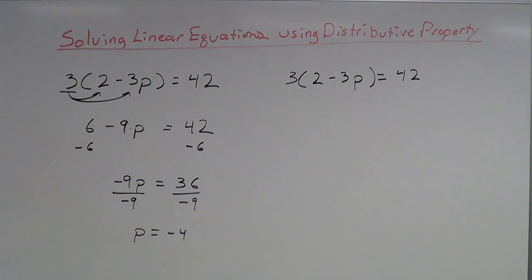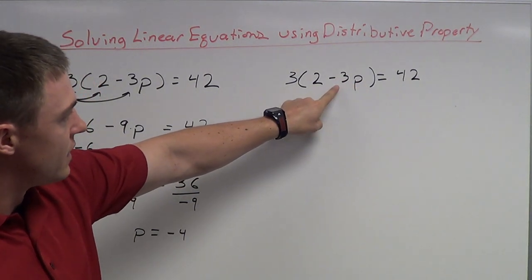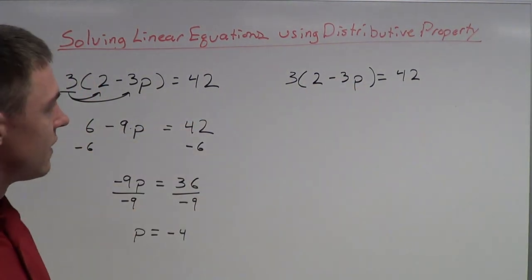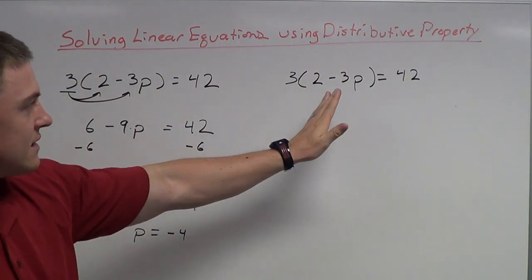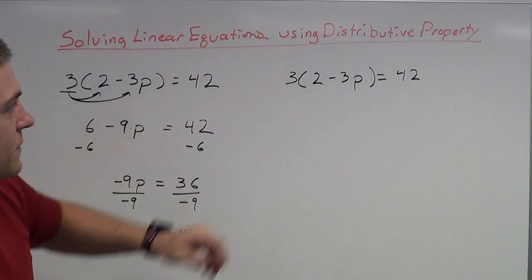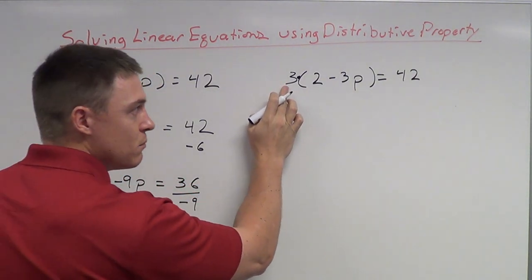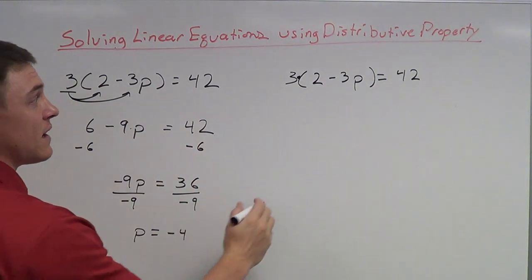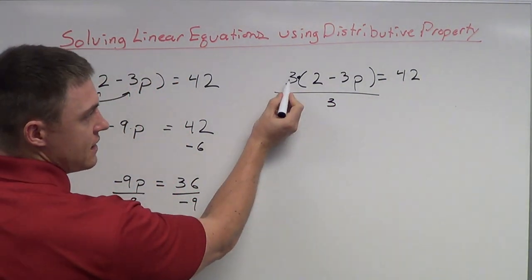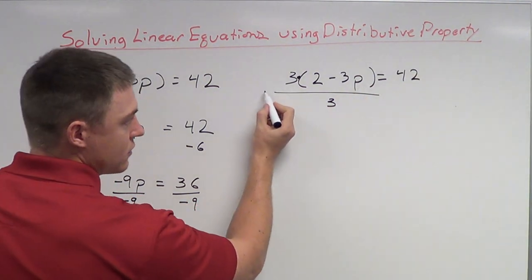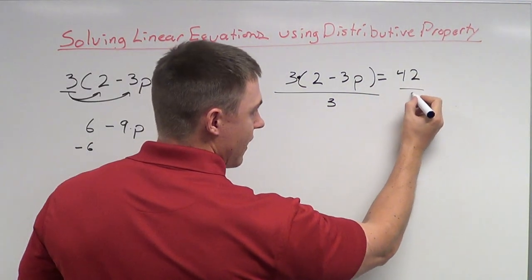Now I'm going to show you solving that same equation without using distributive property — just a different way of solving it. Looking at the left side, I want to get the variable by itself, so I've got to get rid of negative 3, this 2, and this 3 on the outside. Instead of distributing the 3 to the entire parenthesis, I'm actually going to get rid of this 3 first by dividing by 3, since it is multiplying times the variable. Which means I've got to divide by 3 on the right side also.